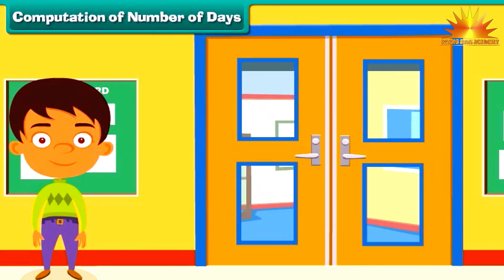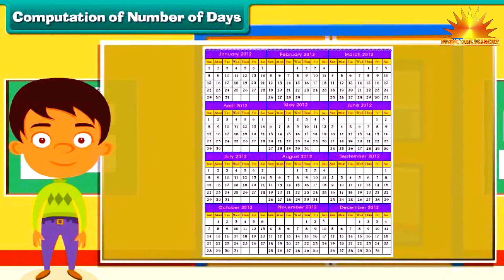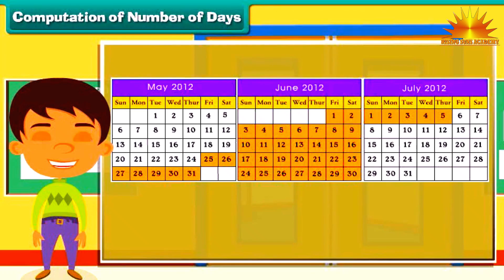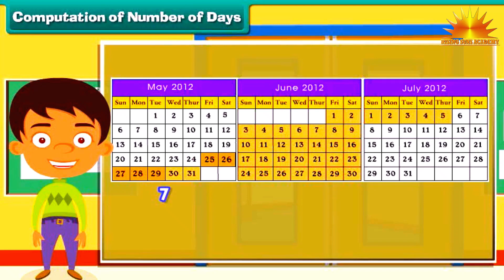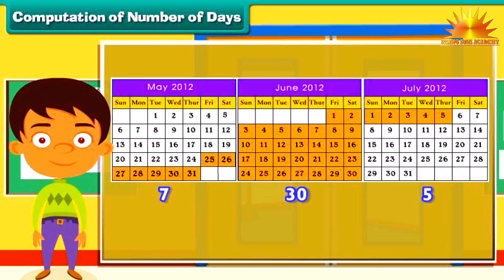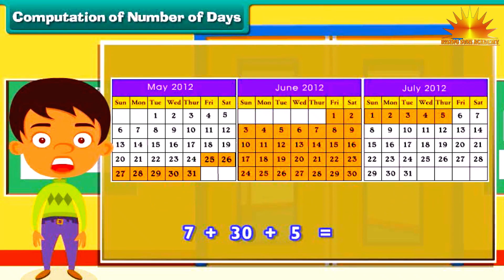Let us solve a problem involving computation of days. Akshat's school announced summer vacation from 25th May 2012 to 5th July 2012. How many days of summer vacation did Akshat get? There are 31 days in May, so 7 days of May (from 25th to 31st May) were included. All 30 days of June were included. And 5 days of July (1st to 5th) were also included. Adding 7, 30 and 5 gives a total of 42 days of summer vacation.